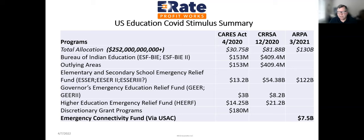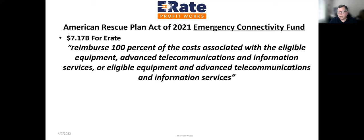The latest one is the Emergency Connectivity Fund. Originally there was $7.17 billion in that fund. The latest stimulus package had an additional $300 million, so we're up to about $7.5 billion. This next round of funding is associated with the leftovers — about $1 billion. The final number isn't in yet, but with the $300 million and the approximately $1 billion, it's going to be in the $1.2 billion range when all is said and done.